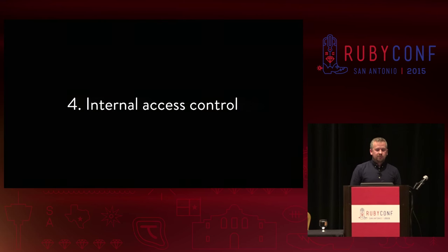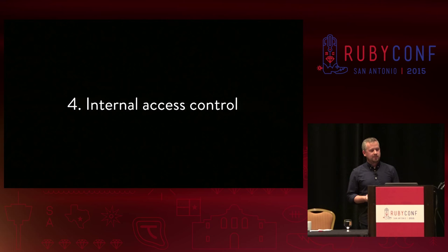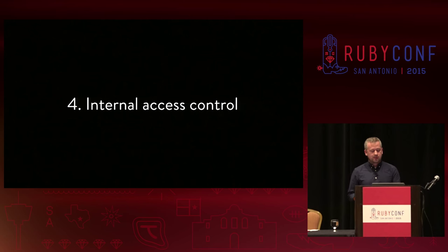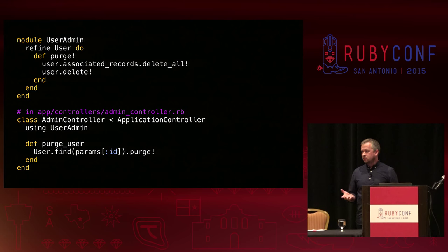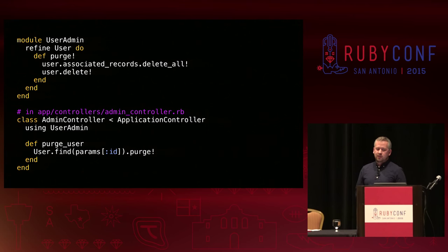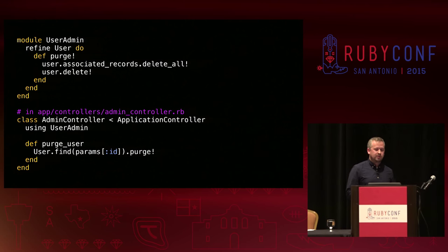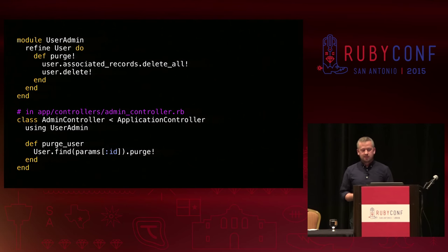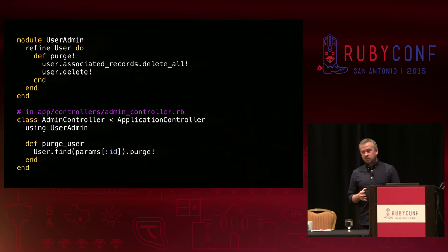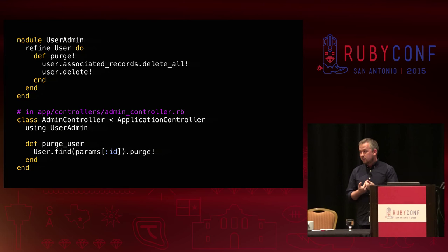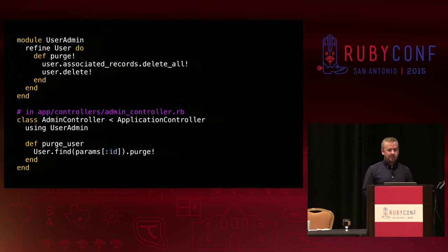Refinements might not just be useful for monkeypatching or implementing DSLs. We might also be able to harness refinements as a kind of design pattern, using them to ensure that certain methods are only callable from specific, potentially restricted parts of our codebase. Consider a Rails application with a model that has some dangerous or expensive method on it. By using a refinement, the only places we can call this method are where we've explicitly activated that refinement. From everywhere else — all other normal controllers, views, or other classes — even though they might be handling the same object or even the same instance, the dangerous or expensive method is guaranteed not to be available there. I think this is a really interesting use for refinements as a design pattern rather than monkeypatching.